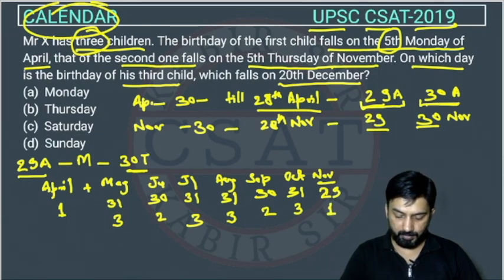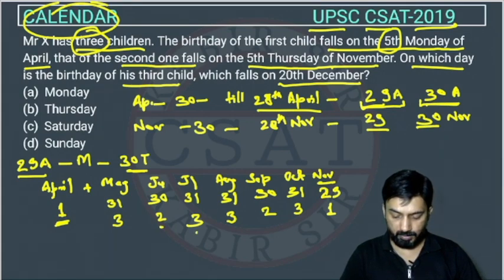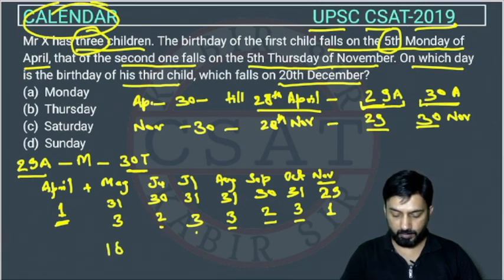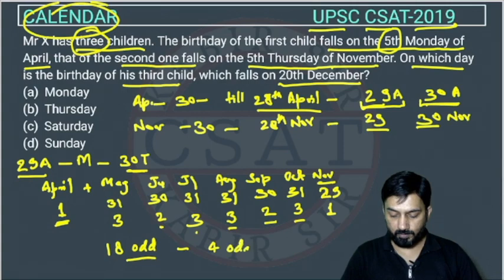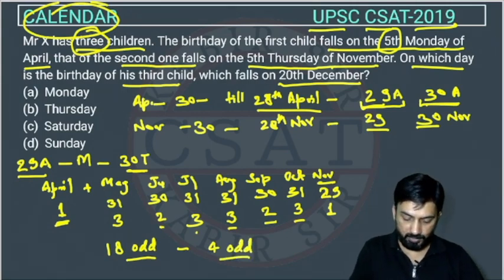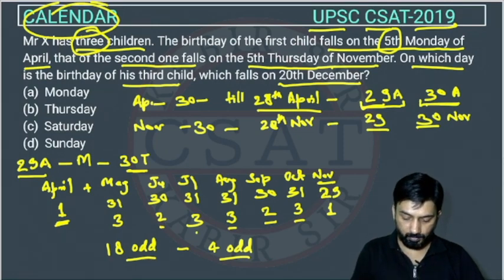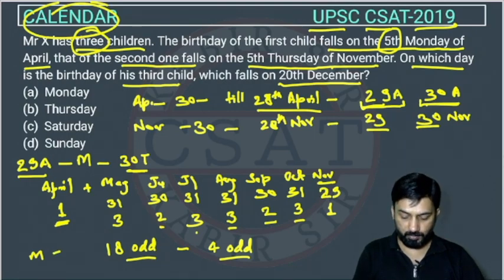Total odd days: 1 + 3 + 2 + 3 + 3 + 2 + 3 + 1 = 18 odd days. Dividing 18 by 7 gives a remainder of 4. So there are 4 odd days. We started from Monday, so adding 4 days: Tuesday, Wednesday, Thursday, Friday. On 29th November there will be Friday.